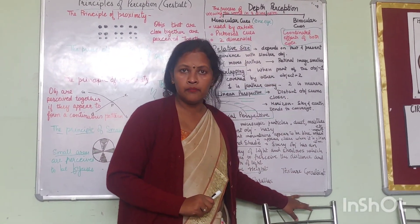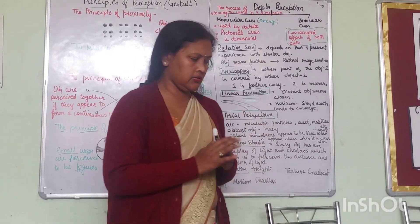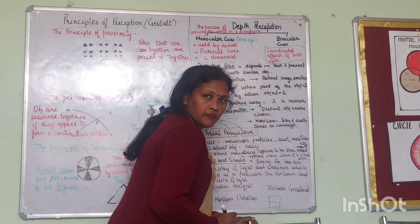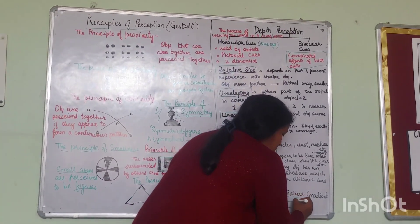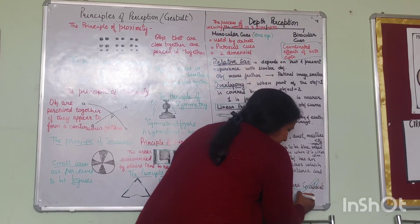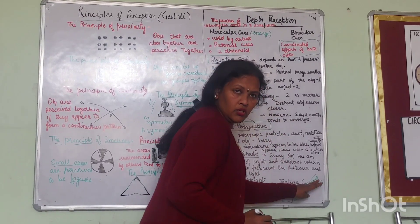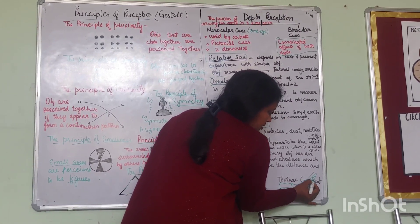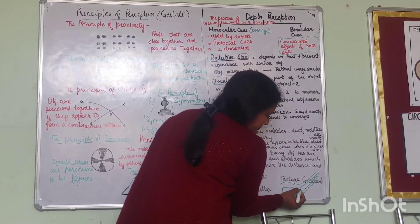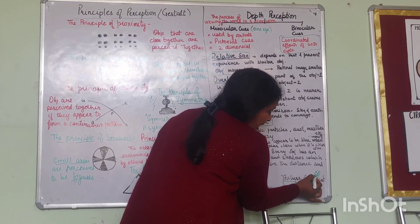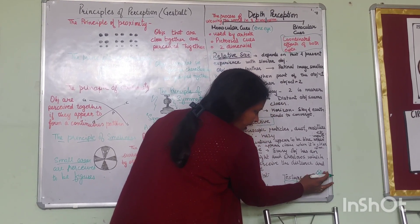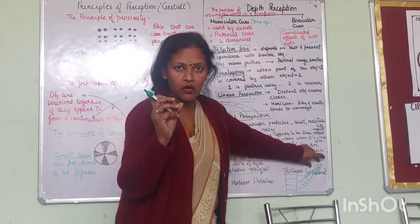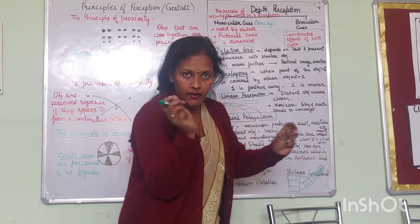Last monocular clue is texture gradient. Think about bricks — when bricks are right in front, their density appears low and they are clearly defined. As you take the same bricks far away, they become more and more dense and compressed looking. Density increases as objects go farther, so the texture gradient tells us about depth.